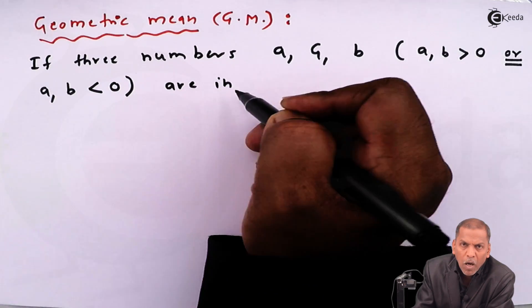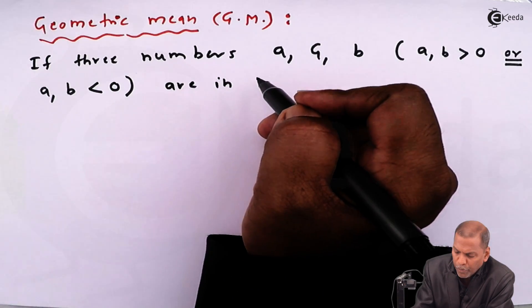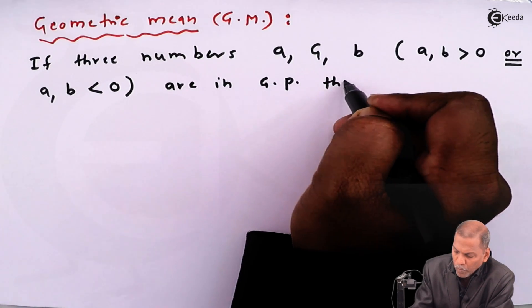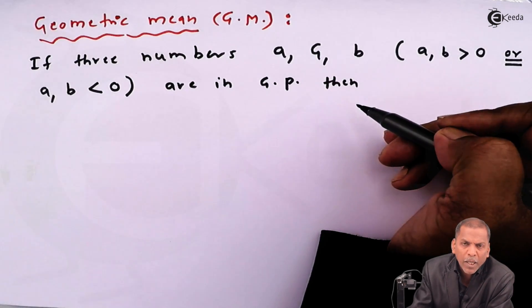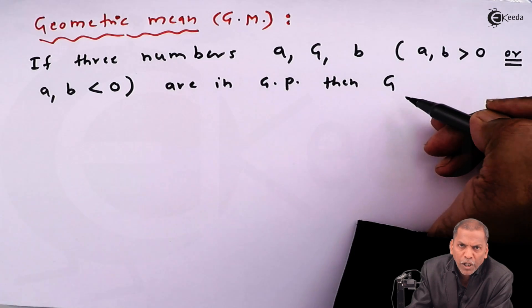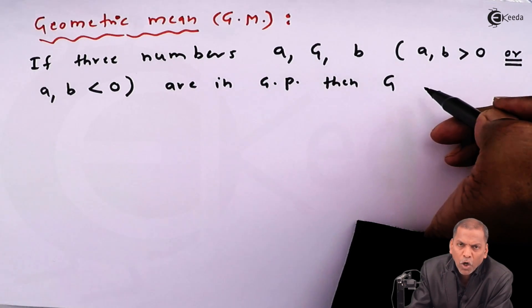are in GP (geometric progression), then capital G is called the geometric mean of two numbers a and b.